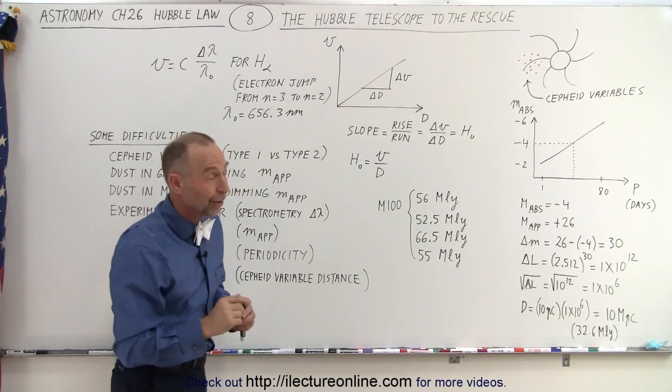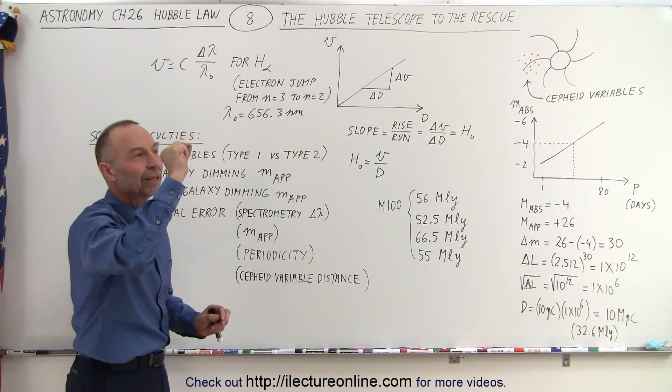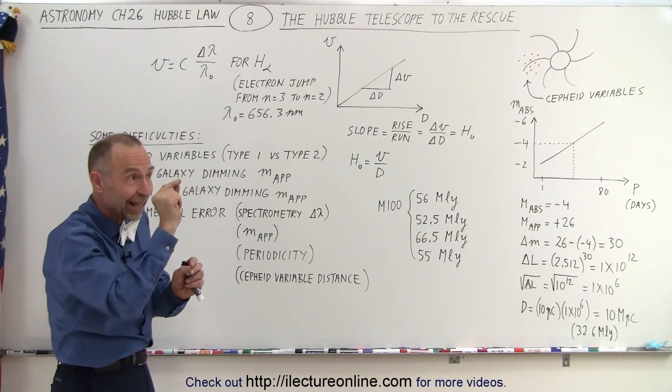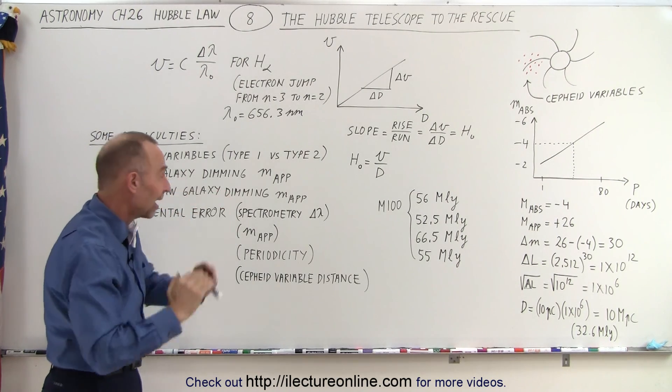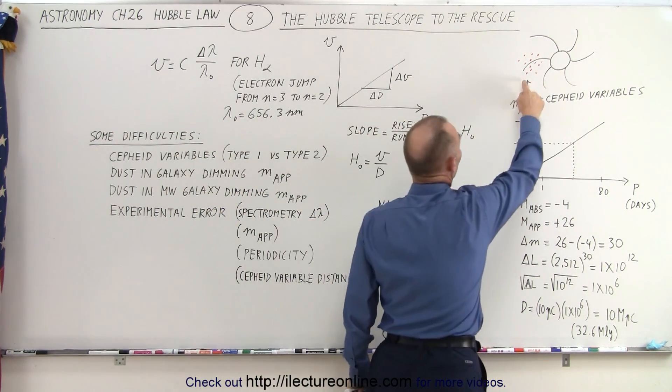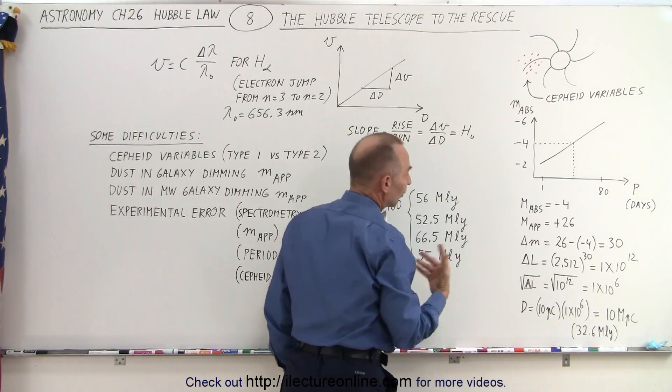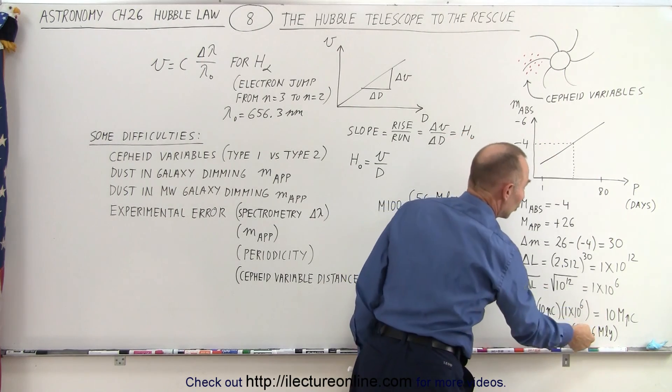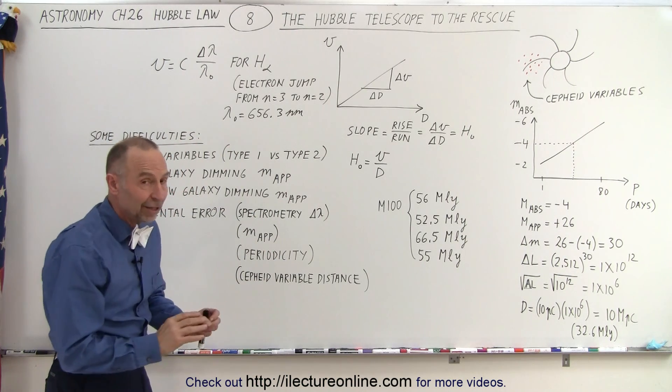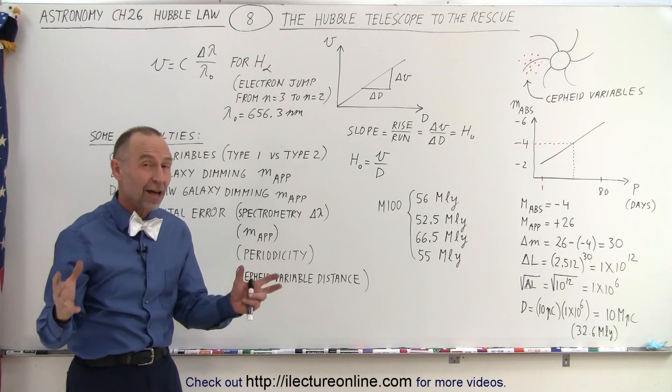Remember we're looking at galaxies that are tens of millions of light years away and catching the very peak of the brightness and the very bottom of the brightness every time—that is very difficult to do. We don't know exactly where that is so we don't have the exact periodicity. And of course the Cepheid variable distance—notice that these are not all at the same distance, some are farther out, some are closer in. So we don't know exactly—of course with a total distance to the galaxy of 32.6 million light years, 10, 20, 30, 40,000 light years may not make a lot of difference, but again it adds to the experimental error.